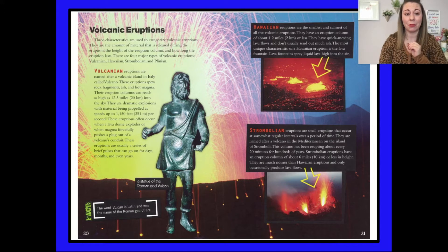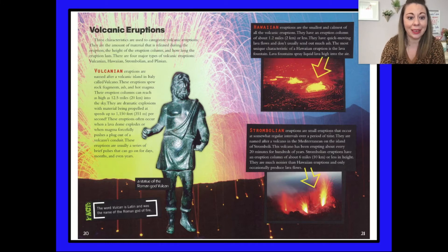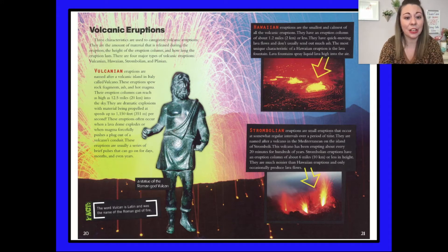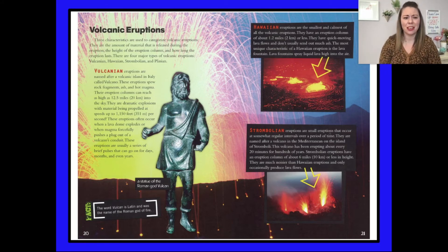Here's the first volcano type — Volcanian. Volcanian eruptions are named after a volcanic island in Italy called Volcano. These eruptions spew rock fragments, ash, and hot magma. Their eruption columns can reach as high as 12.5 miles or 20 kilometers into the sky. They are dramatic explosions with material being propelled at speeds of up to 1,150 feet or 351 meters per second. These eruptions often occur when a lava dome explodes or when magma forcefully pushes a plug out of a volcano's conduit. They are usually a series of brief pulses that can go on for days, months, or even years.